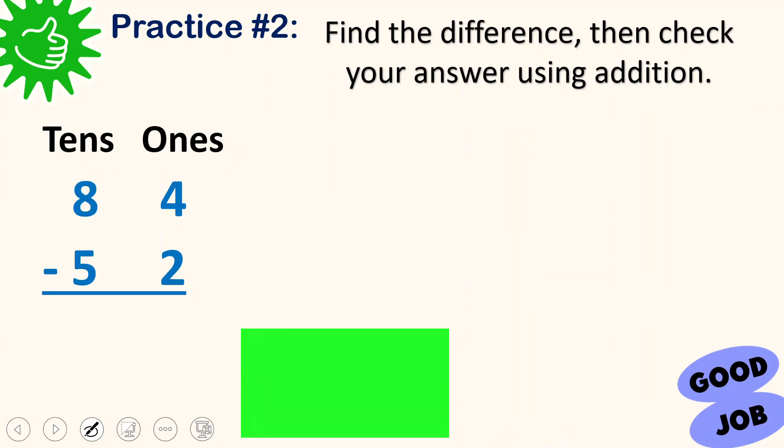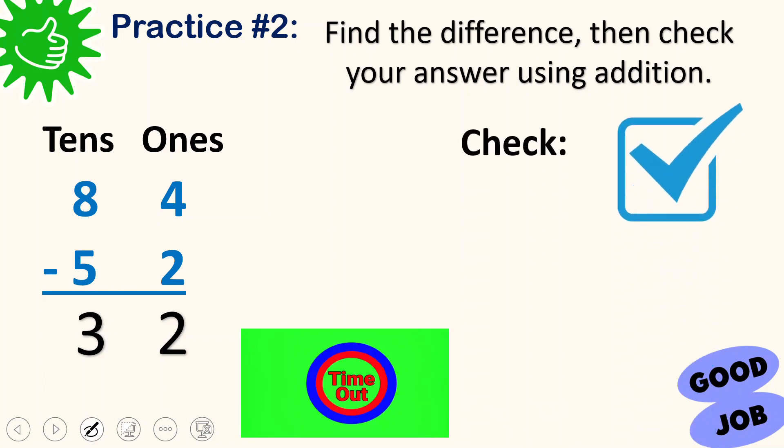Practice number 2. 84 minus 52. Go! Let's check. 4 minus 2 is 2. 8 minus 5 is 3. Let's see if it's correct. By doing this checking, we add. 32 and 52. 2 plus 2 is 4. 3 plus 5 is 8. See? They are the same. Very good.